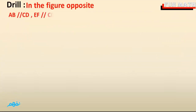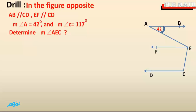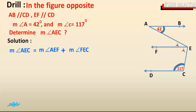In the figure, AB is parallel to CD, and EF is parallel to CD. The measure of angle A is equal to 42 degrees and the measure of angle C is equal to 117 degrees. Determine the measure of angle AEC. The solution: measure of angle AEC equals measure of angle AEF plus measure of angle FEC.